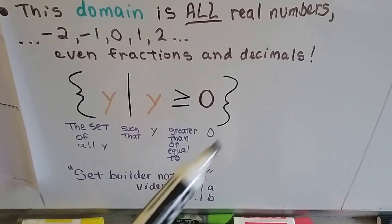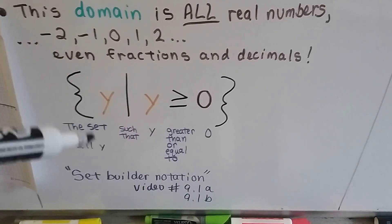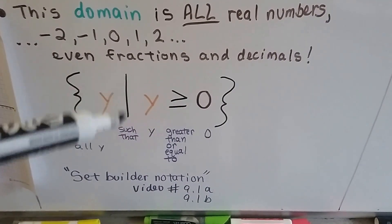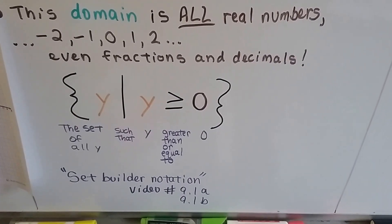And we put it in these set brackets, like this, these set braces, and it's read as the set of all y such that y is greater than or equal to 0. Okay?